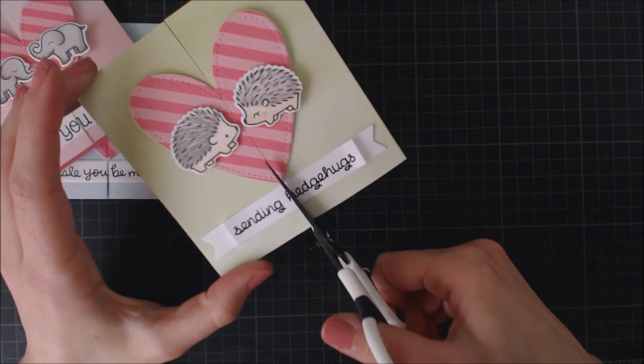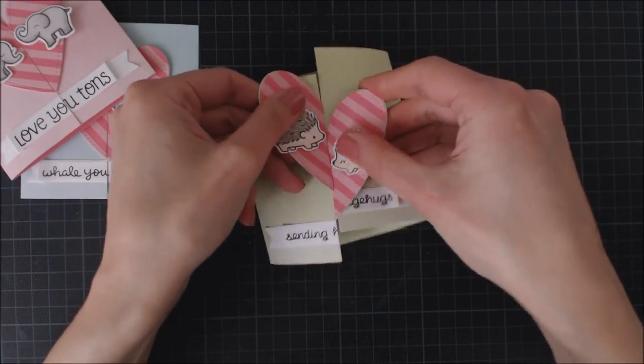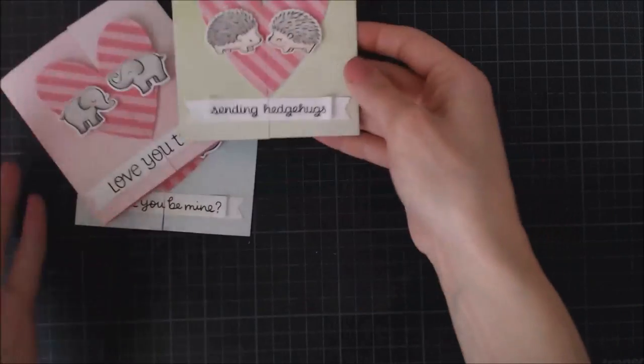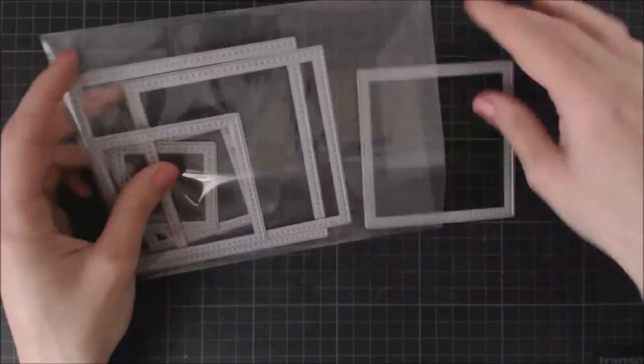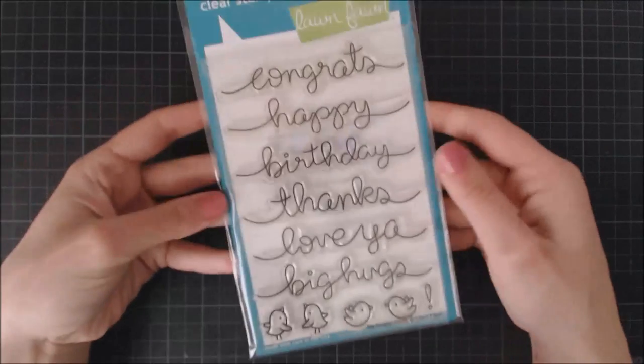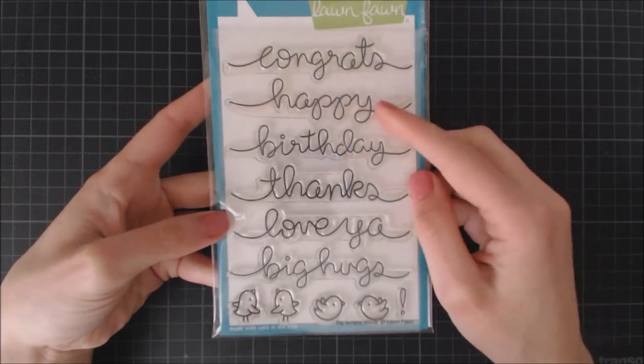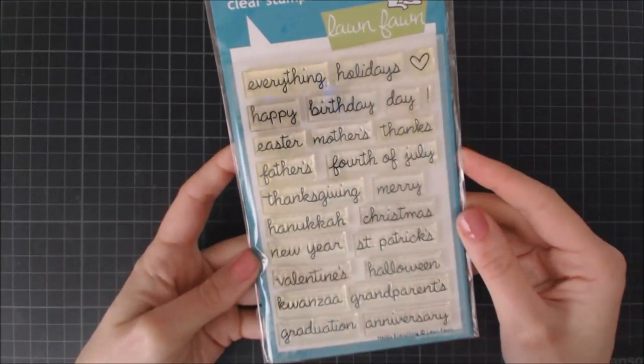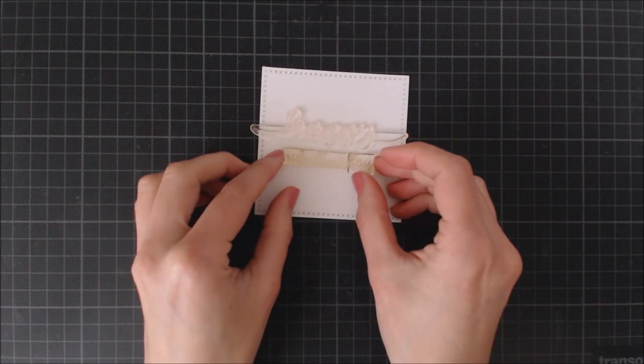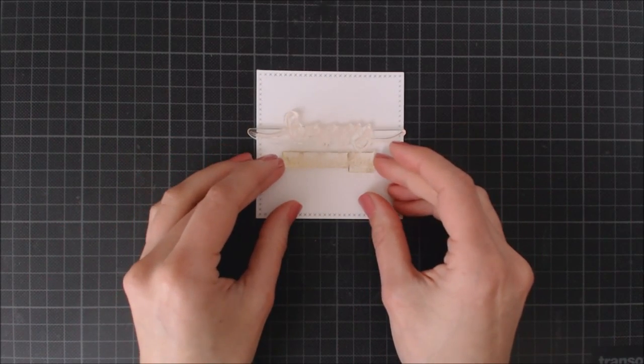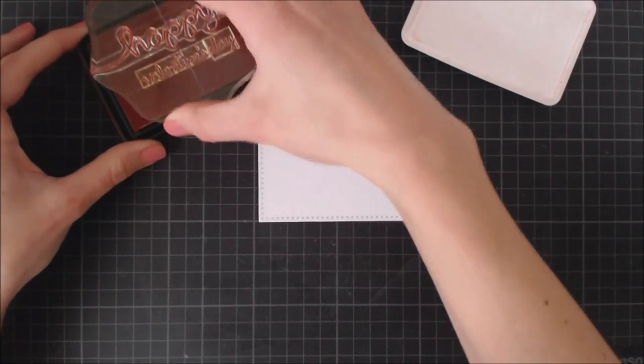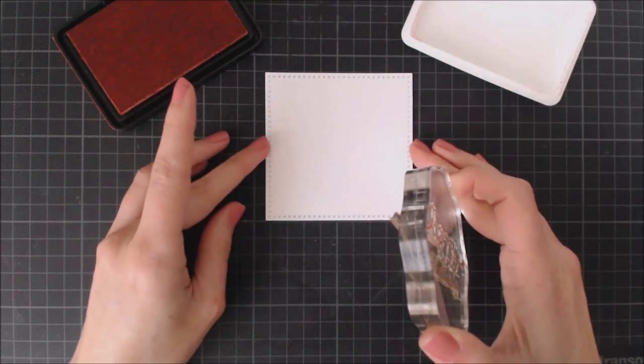Now the front of my cards is done but I wanted to work also on the inside. I went ahead and die cut a square panel using the cross stitch squares die set and I'm going to be using the big scripty words and happy everything stamp sets to stamp my sentiment on the panel. I'm stamping them using some guava ink by Lawn Fawn.